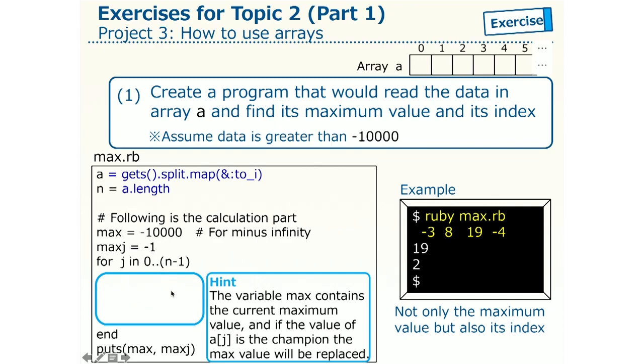Then, after going through all elements of the array A, that is, after the last execution of this blue part, with j equals to n minus 1, the value of the variable max should keep the max value in this whole array. And the maxj should keep its index in the array A. Let's create a program with this thought in your mind.